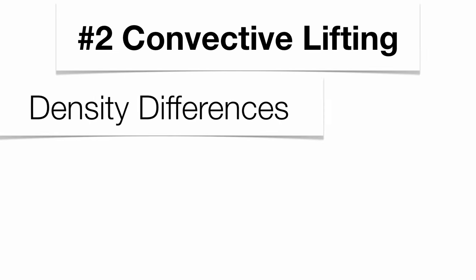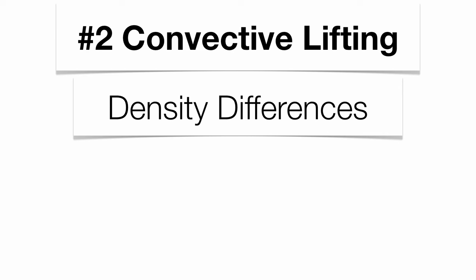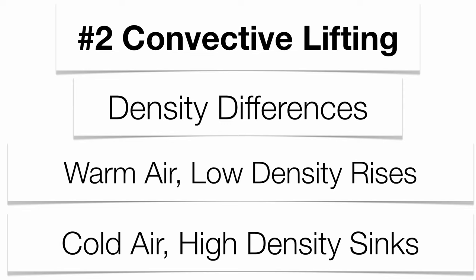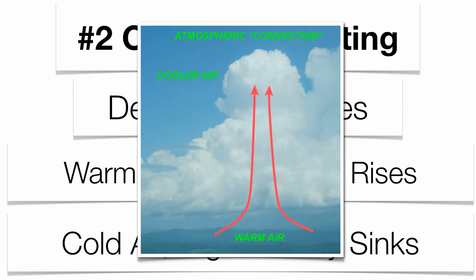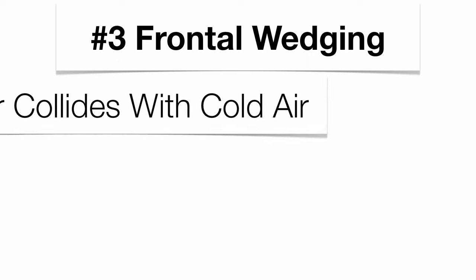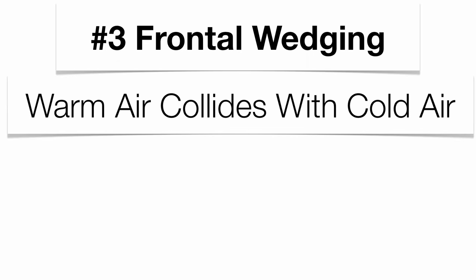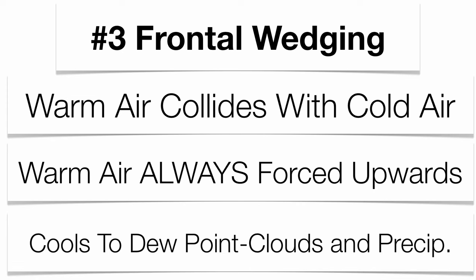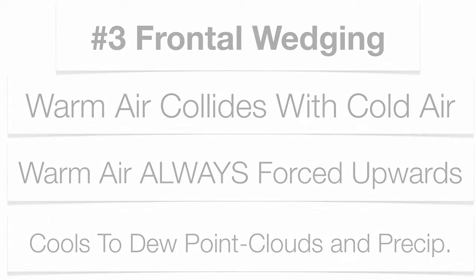The second way warm air rises is through convective lifting. Convection is all about density differences — warm air rises and cold air sinks, creating constant circulation. Please check out other podcasts in this series for more detail on convection. The third way is what we call frontal wedging. This is when a warm air mass and a cold air mass collide with each other. Warm air always loses and gets forced upward, cooling through the dew point, and clouds and precipitation form at the point where frontal wedging actually occurs.